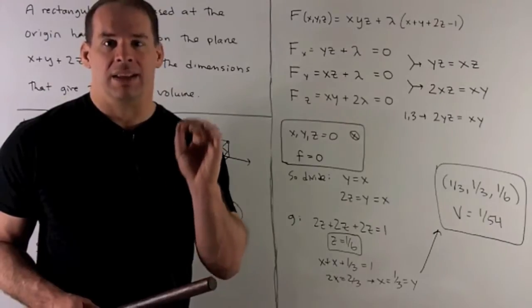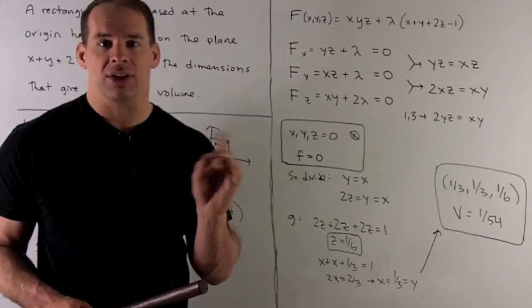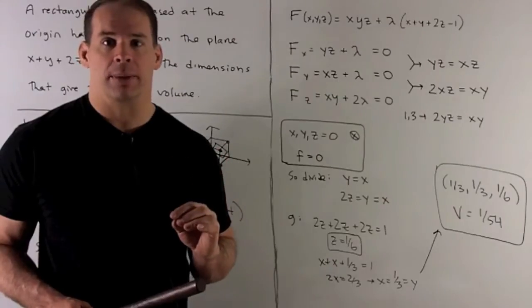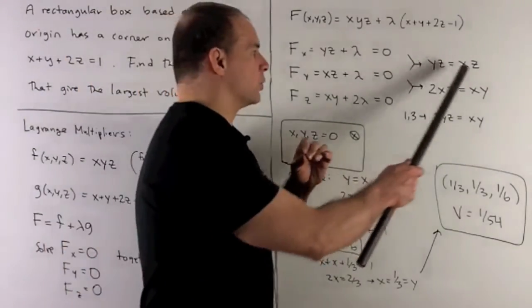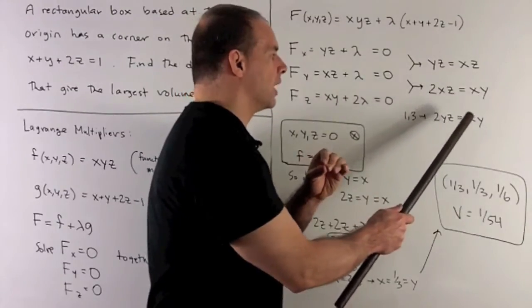Next step, we're going to get lambda out of our equations. So we can move the lambdas to the other side and then just see how things match up. So that'll give us the equations yz equals xz, 2xz equals xy, and 2yz equals xy.